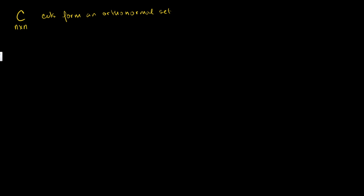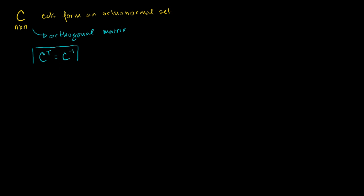If you have a matrix like this — and I actually forgot to tell you the name of this — this is called an orthogonal matrix. We've already seen that the transpose of this matrix is the same thing as the inverse of this matrix, which makes it super useful to deal with. The transpose of this matrix is equal to the inverse.